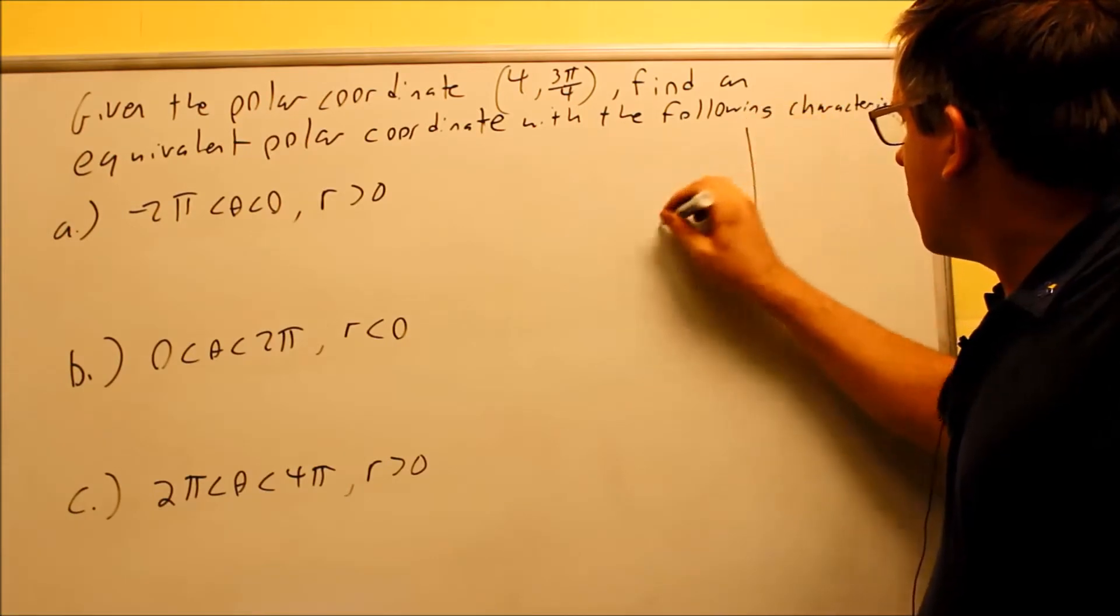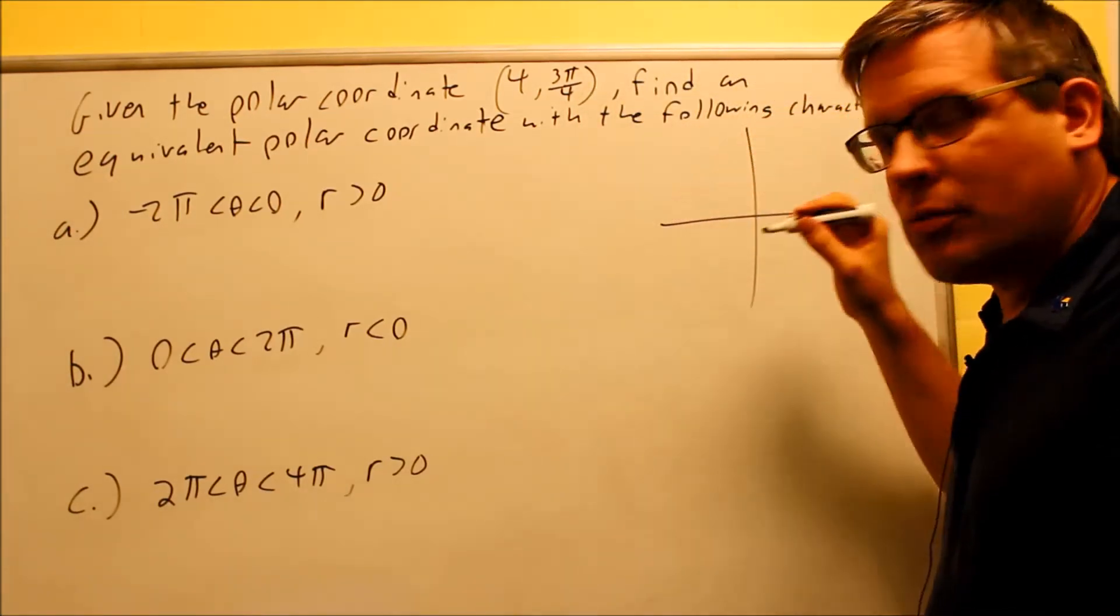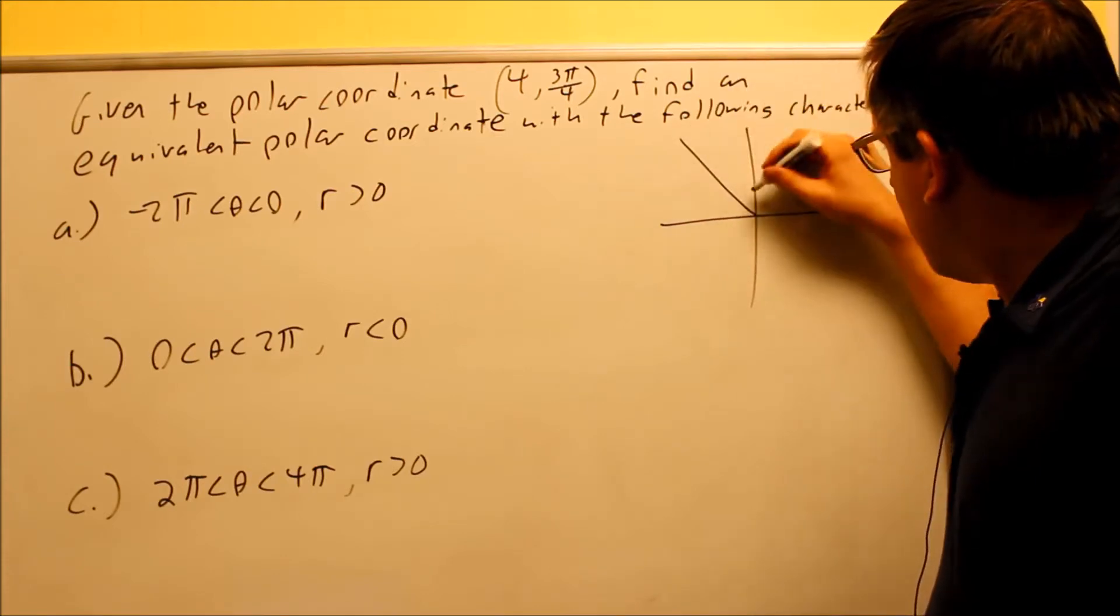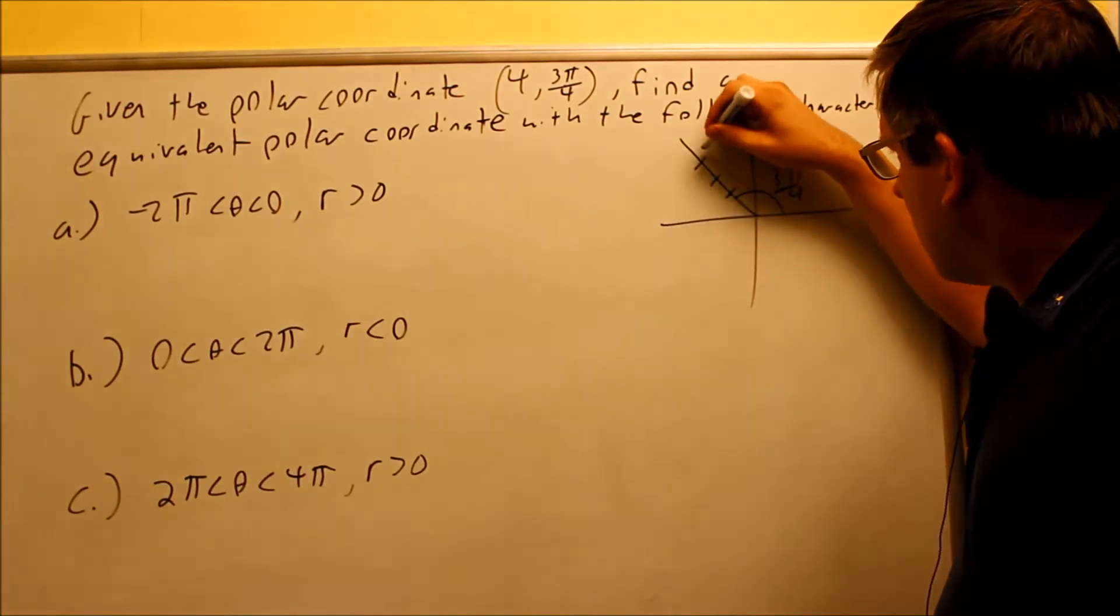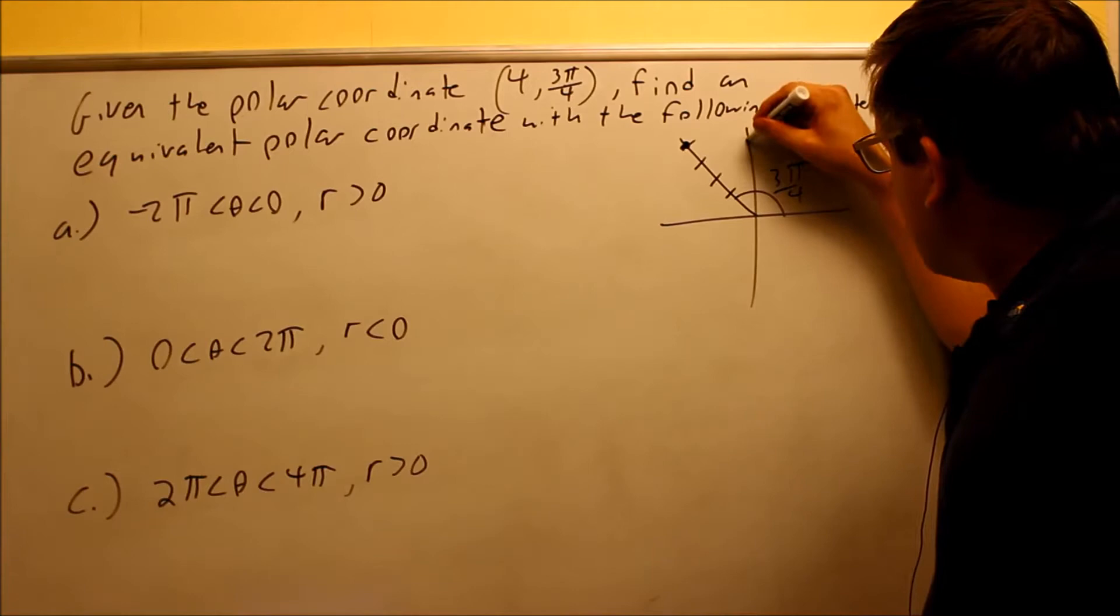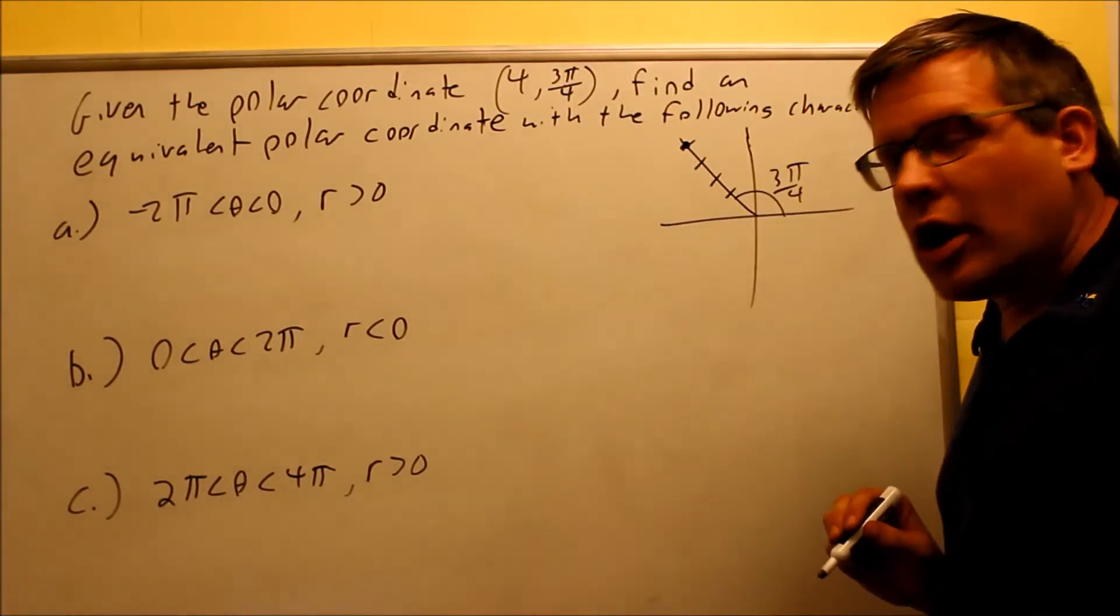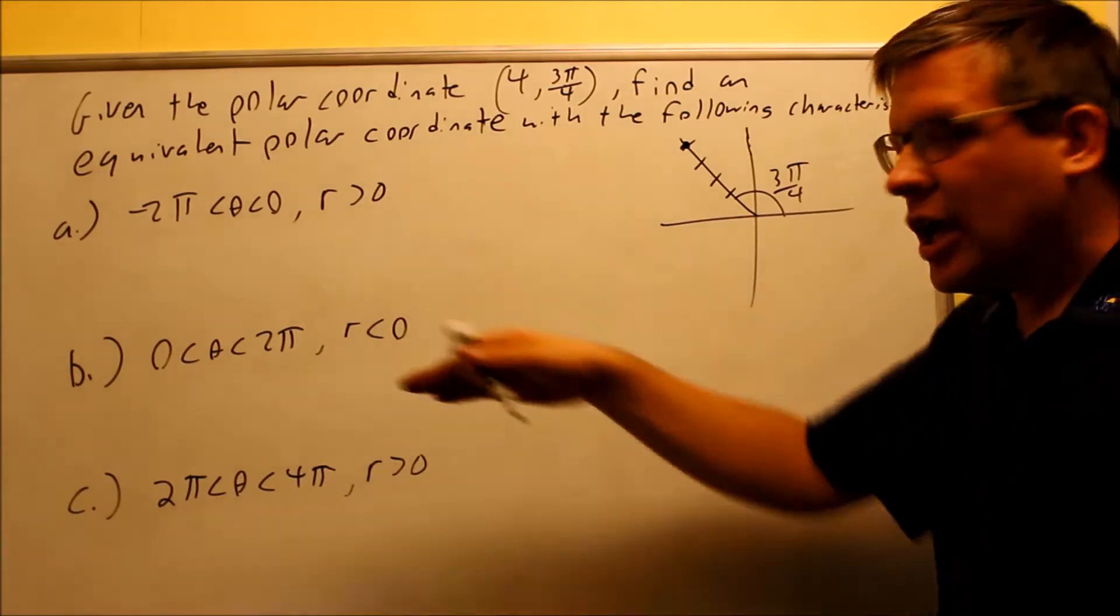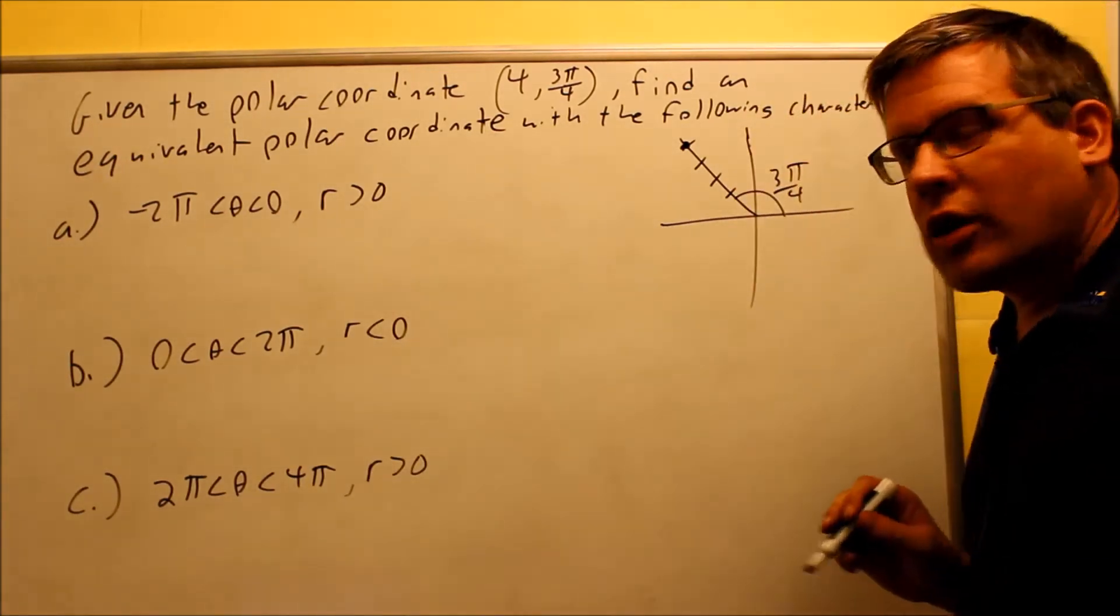First thing I'm going to do is plot the point. Now, 3π/4 is between π/2 and π, so that would be right here. This is going to be my angle 3π/4. I'm going to count four spaces along that line there, which represents the r value of 4, and my point ends up in the second quadrant. So I just need to make sure that when I do parts A, B, and C, I still end up in the second quadrant at the same spot.